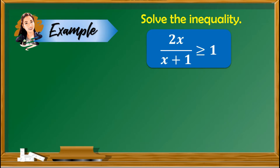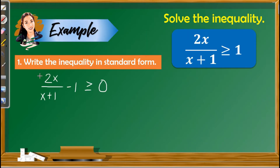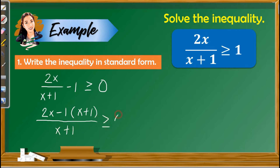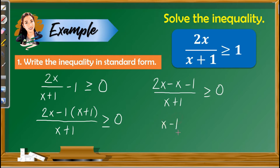First example: solve the inequality 2x over x plus 1 is greater than or equal to 1. We need to make this a single fraction. The LCD is x plus 1, so we have 2x minus 1 times x plus 1 over x plus 1, greater than or equal to 0. Simplifying the numerator, we have 2x minus x minus 1 over x plus 1, greater than or equal to 0. This gives us x minus 1 over x plus 1 is greater than or equal to 0. This is the standard form of the given inequality.